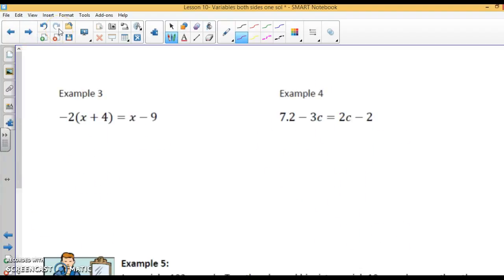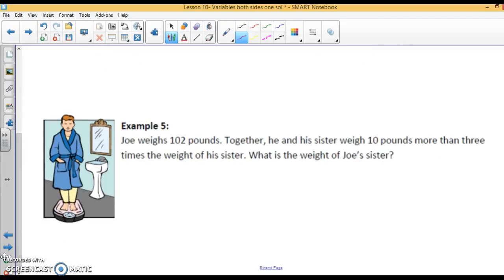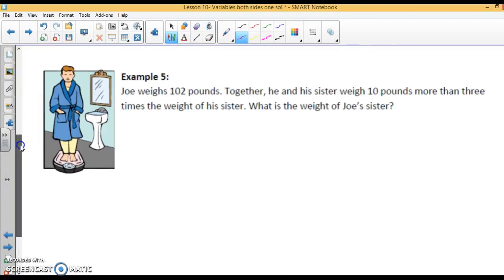We're going to skip these and do the same thing. I want to go to this word problem, Example 5. It says Joe weighs 102 pounds. Together, he and his sister weigh 10 pounds more than 3 times the weight of his sister. What is the weight of Joe's sister? That's confusing. Remember, always define the variable. What are we looking for? Joe's sister's weight. So let's let x equal the sister's weight.